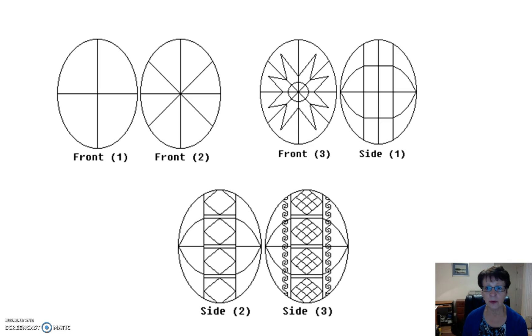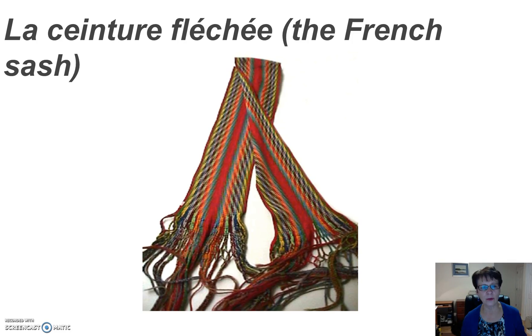it also involves an understanding of the cultural meaning of the symbols, the colors, and shapes. For example, red means happiness, hope, and passion. The sun and the stars mean life, fortune, and growth.